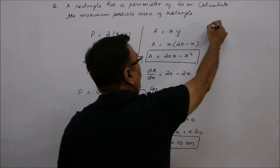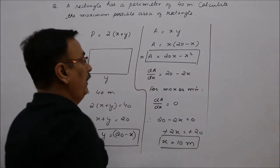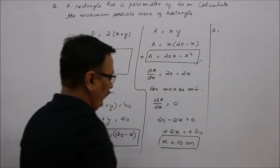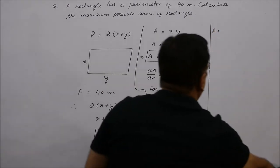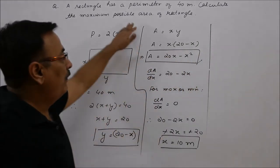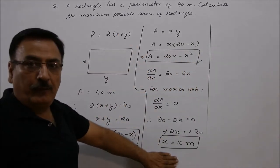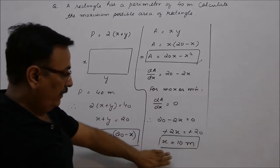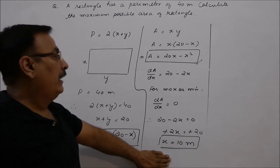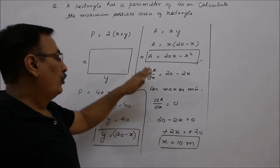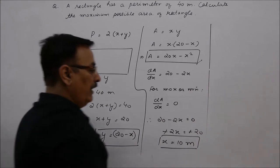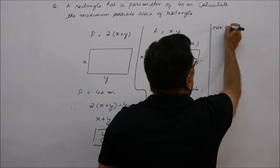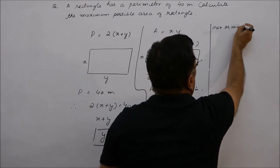When we differentiate these values, we know that x equals 10 is either maximum or minimum, so we need to confirm whether it is maximum or minimum. Let's confirm this.